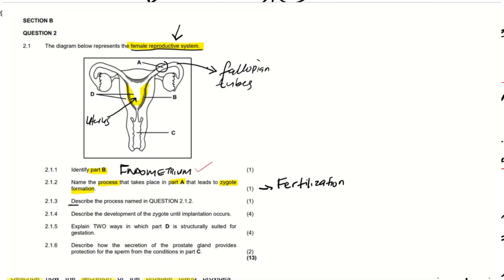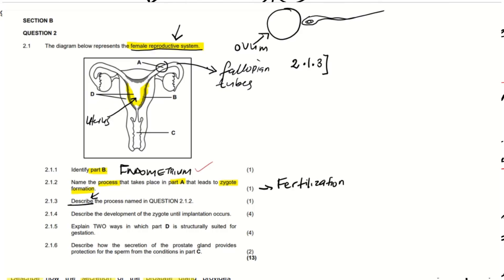Question 2.1.3 says we should describe the process we named in question 2.1.2. We said the process taking place at the fallopian tubes is fertilization, and now we have to describe how it actually happens. Remember the ovum or egg cell of the female is found at the fallopian tube during fertilization. When the sperm cell reaches the ovum, it breaks down a portion of the ovum causing its nucleus to get inside. The ovum itself has its own nucleus, so when these two nuclei fuse together, fertilization has taken place.